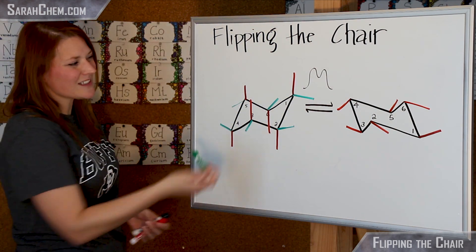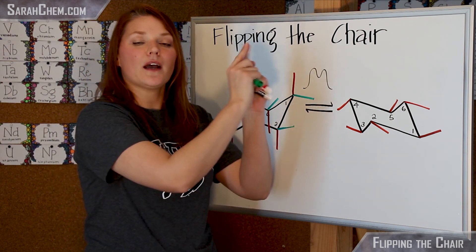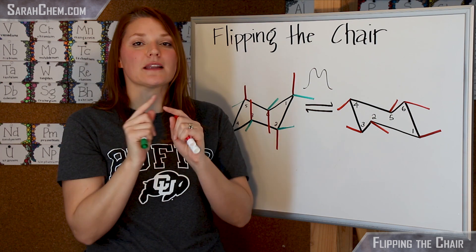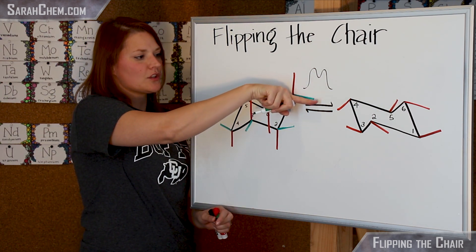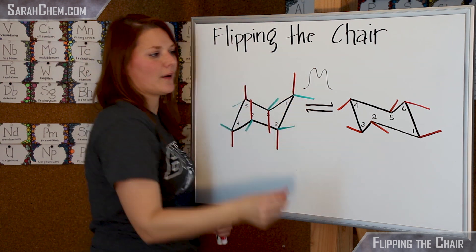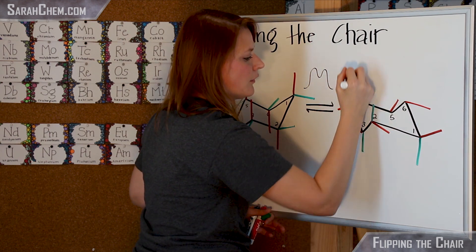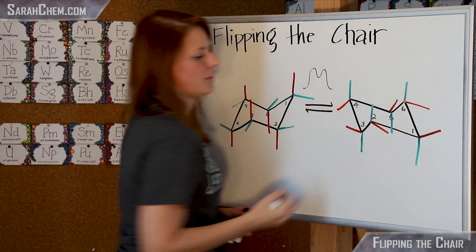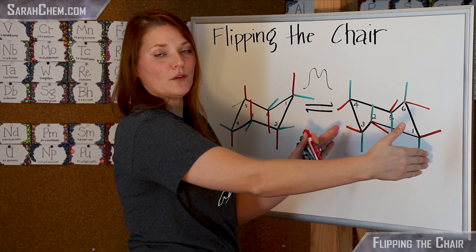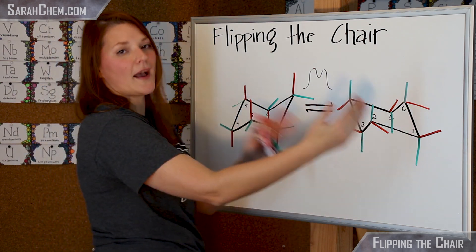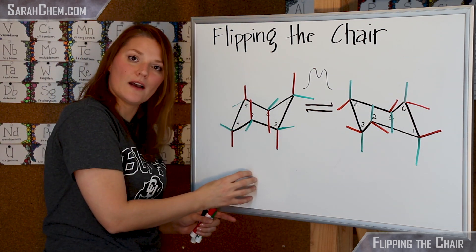Pretty much exactly the same thing happens with equatorial positions. If it's equatorial in one chair, it'll become axial in the other, but it's going to maintain its up or down character. So position 1, which was equatorial, becomes axial down in the flipped chair. Everything that was axial became equatorial, and everything that was equatorial became axial — but if it was up, it remains up, and if it was down, it remains down.